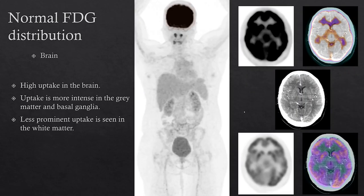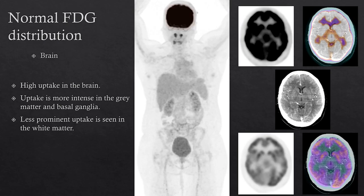For FDG normal distribution, there is high uptake in the brain, mainly in the grey matter and the basal ganglia. Normally we window the PET image to hepatic activity. When you do that, you see an intense pattern of uptake. Just as you would window CT images for various structures, you can also window the PET activity to better see structures in the brain. Most centers scan from the base of the skull to the thighs, but if you do scan the entire brain, you want to make sure you window it appropriately so you don't miss any abnormal uptake.